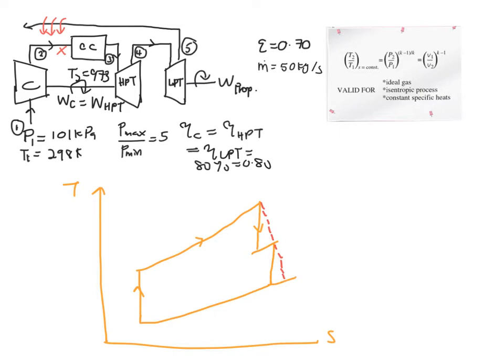And not to forget the actual part of your compressor. So now you can label all your processes together. This is the compression part, state 1 to 2S. This will be your actual value